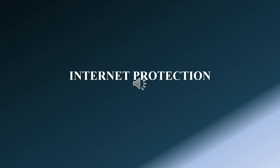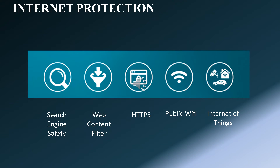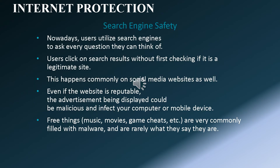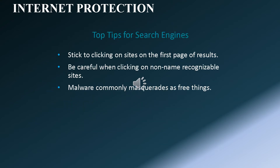Topic number three: Internet Protection. Subtopics include search engine safety, web content filter, HTTPS, public Wi-Fi, and Internet of Things. Search engine safety: nowadays users utilize search engines to ask every question they can think of. Users click on search results without first checking if it is a legitimate site — this also happens on social media websites. Even if the website is reputable, advertisements displayed could be malicious and infect your computer or mobile device. Free things such as music, movies, and game cheats are very commonly filled with malware. Top tips for search engines: stick to sites on the first page of results, be careful when clicking on non-recognizable sites, and be aware that malware commonly masquerades as free things.